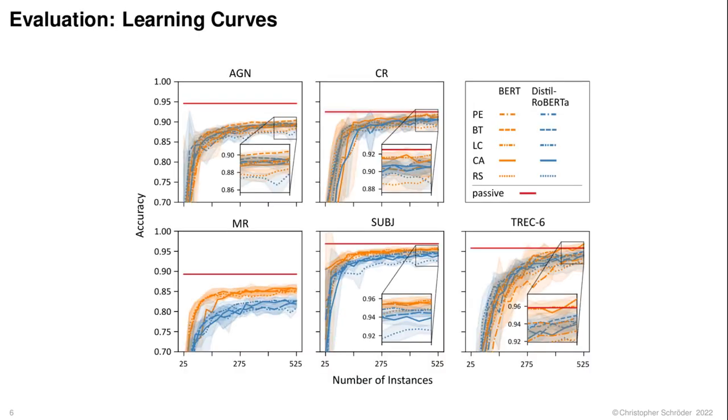We can see steeper learning curves for BERT than for DistilRoBERTa, but surprisingly, DistilRoBERTa comes remarkably close in later iterations.